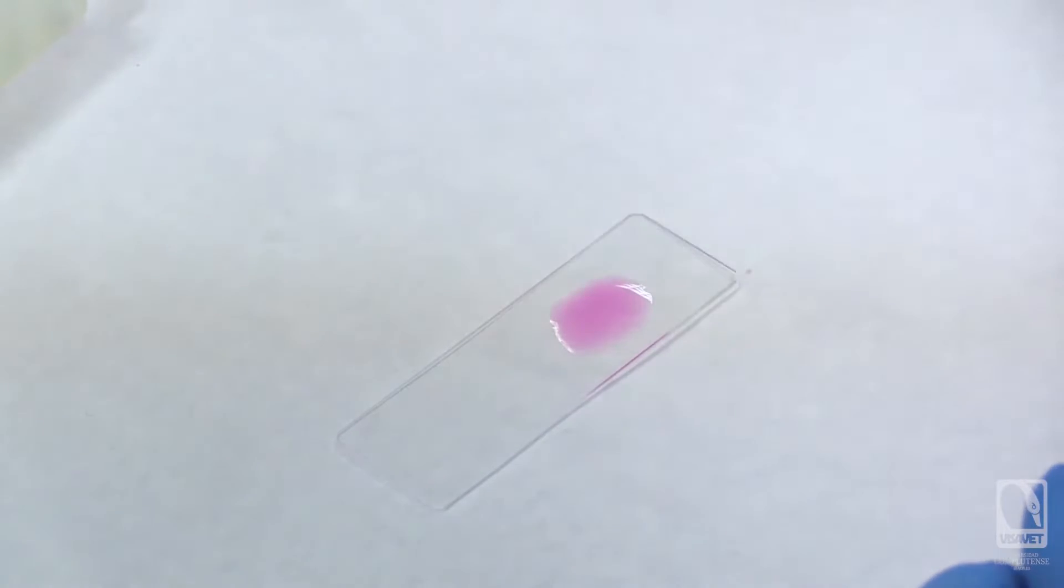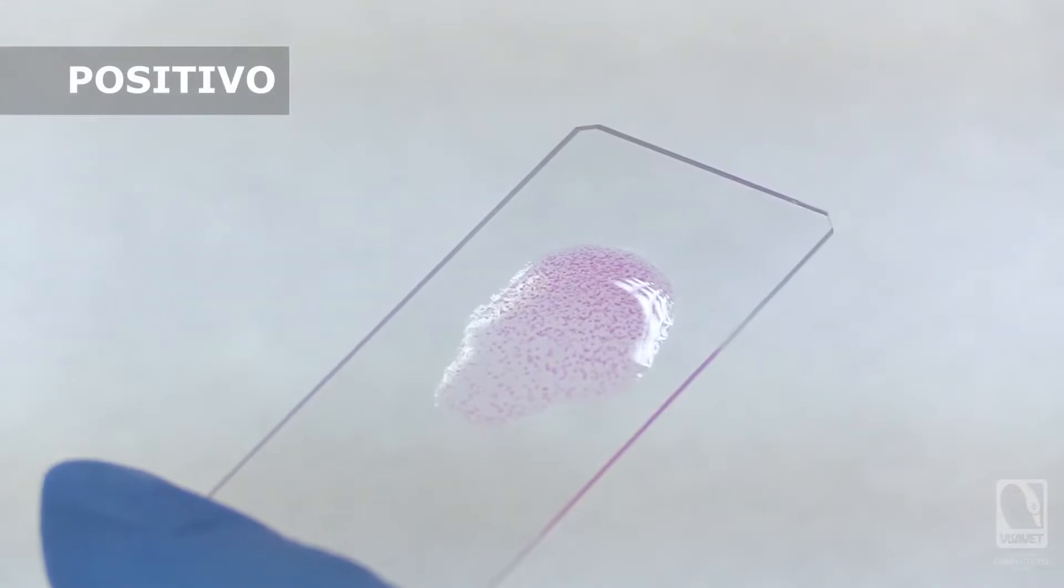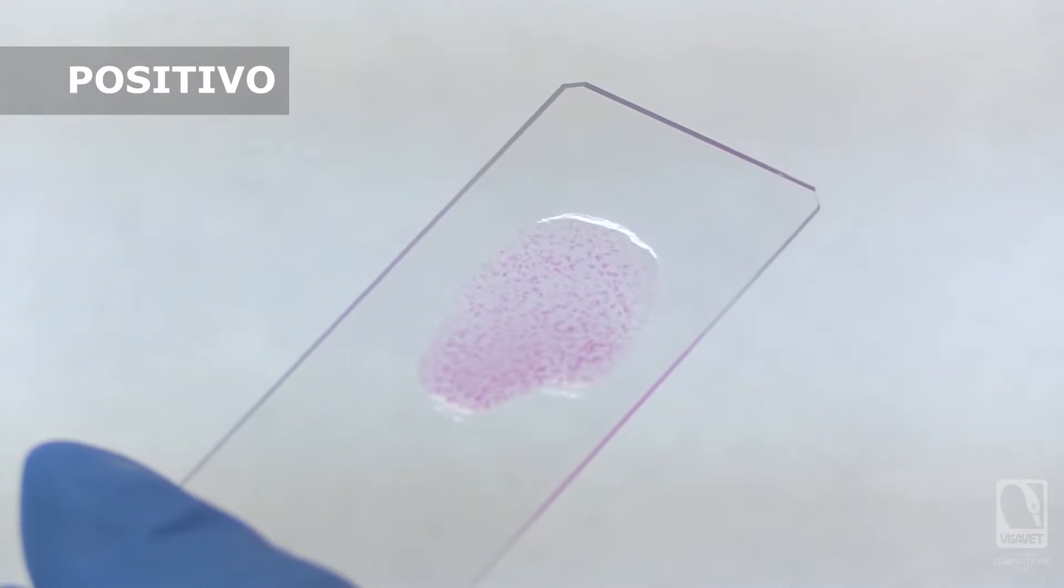Afterward, the slide will be gently rotated for a total of 4 minutes to thoroughly mix the serum and antigen. We will then proceed to observe and analyze the reaction, looking specifically for the visible agglutination.